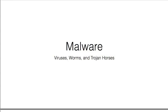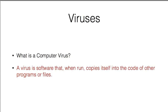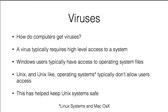We are now going to talk about malware — this includes things like viruses, worms, and Trojan horses. A computer virus is software that, when run, copies itself into the code of other programs or files. Just like a biological virus, it spreads on its own: when executed, it copies itself to other programs or files so that when those files are opened or programs are run, the virus code runs and copies itself again. It may also do more malicious things.